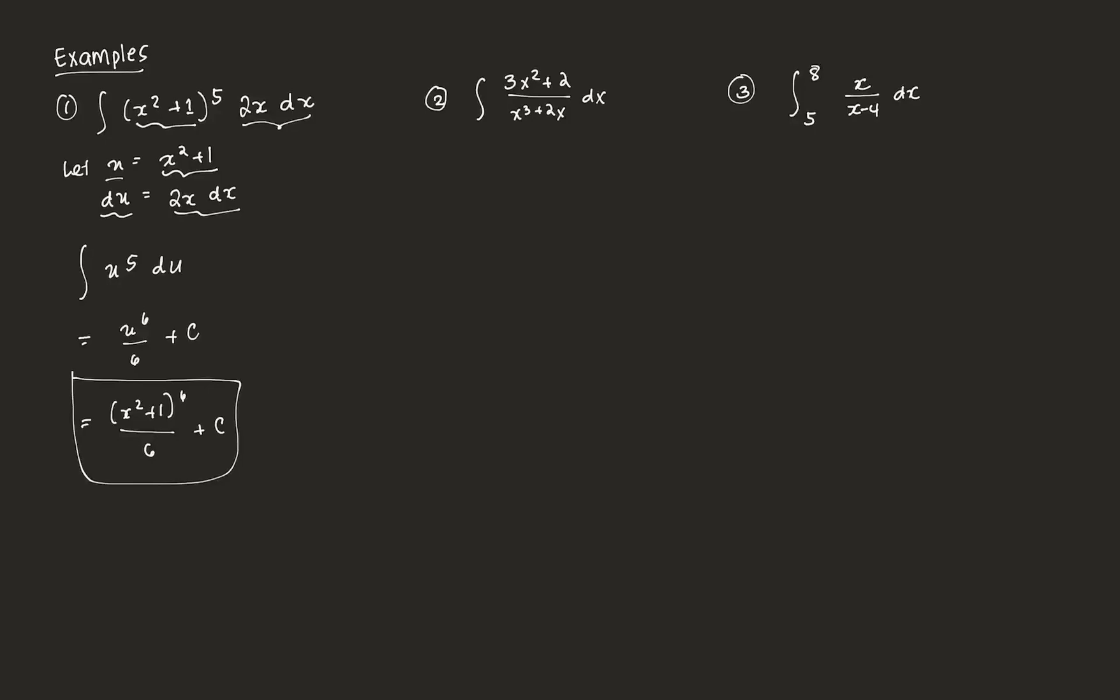Let's go to the second one. We have a fraction in this case. Say we let u be equal to the denominator. Let's try this one, x³ + 2x. If we get du, the derivative of that would be 3x² + 2, then append dx.